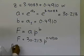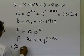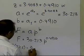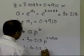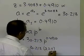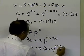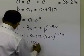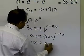If somebody asked you, can you find out the flow rate for a pressure of 22.5 psi? All you have to do is plug in 22.5: 30.213 times 22.5 raised to power 0.4910, and the value turns out to be 139.4 gallons per minute.